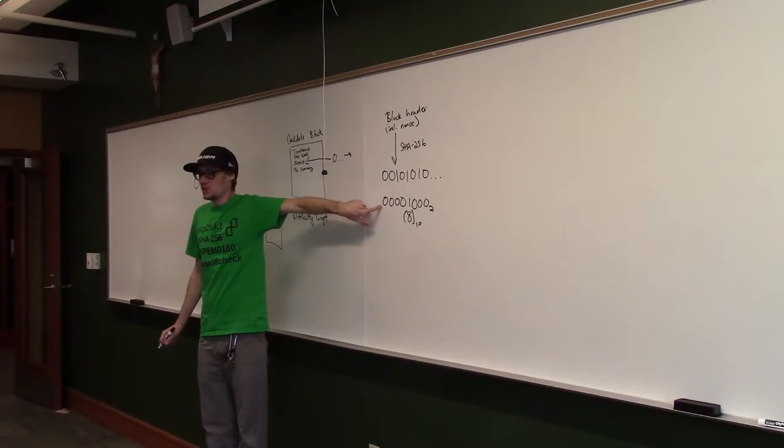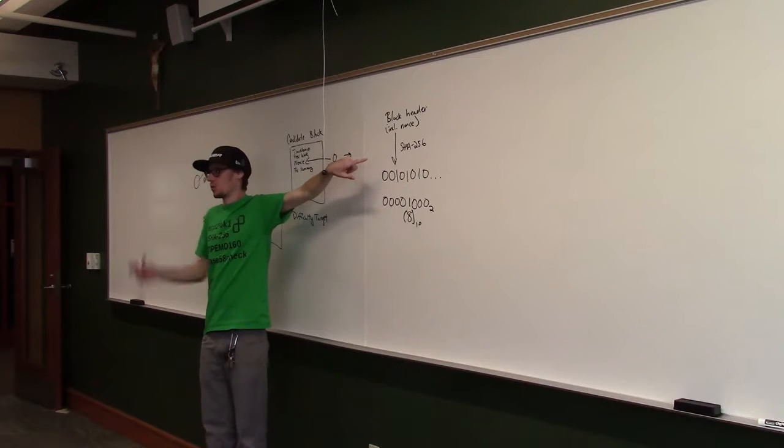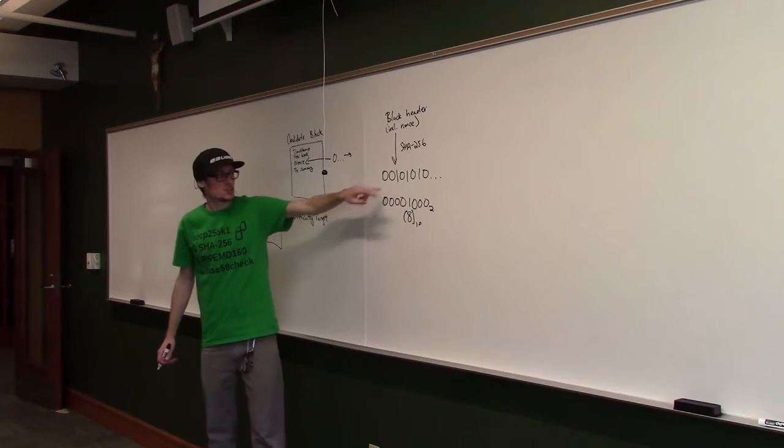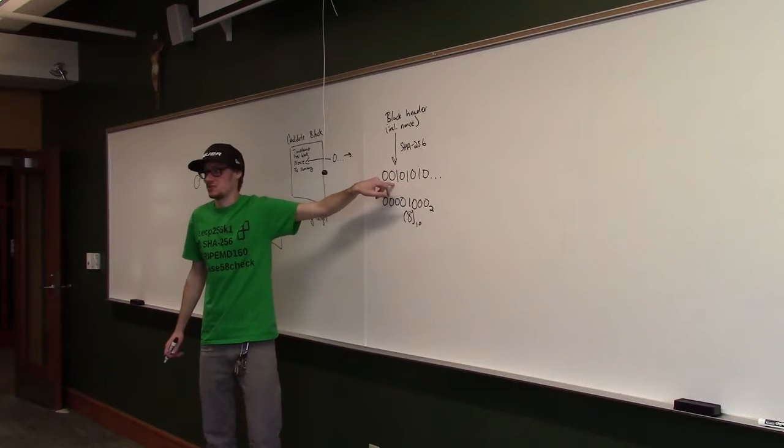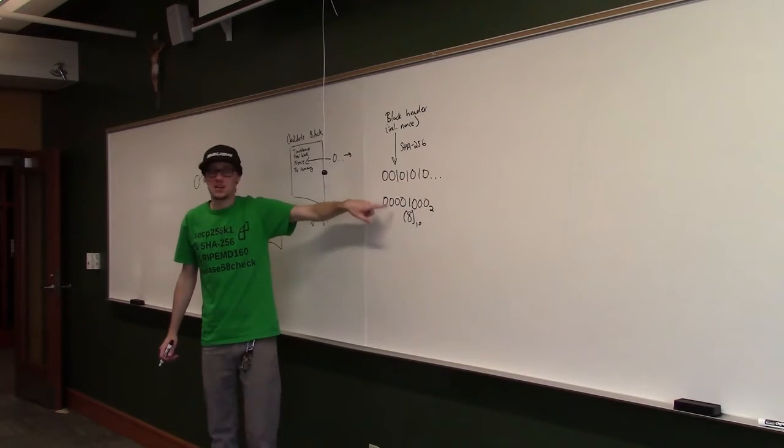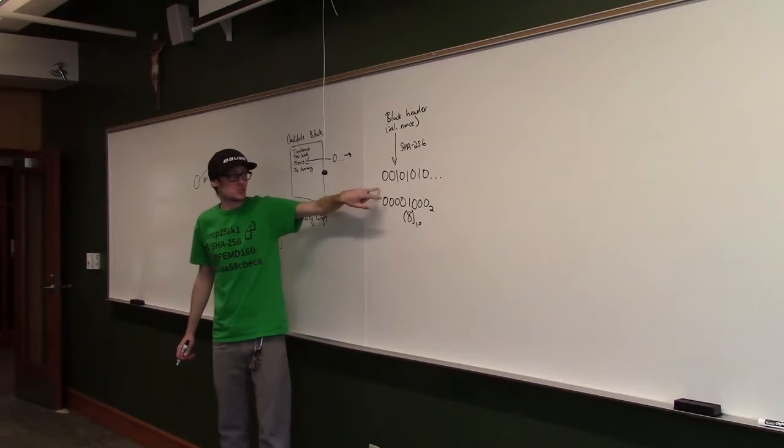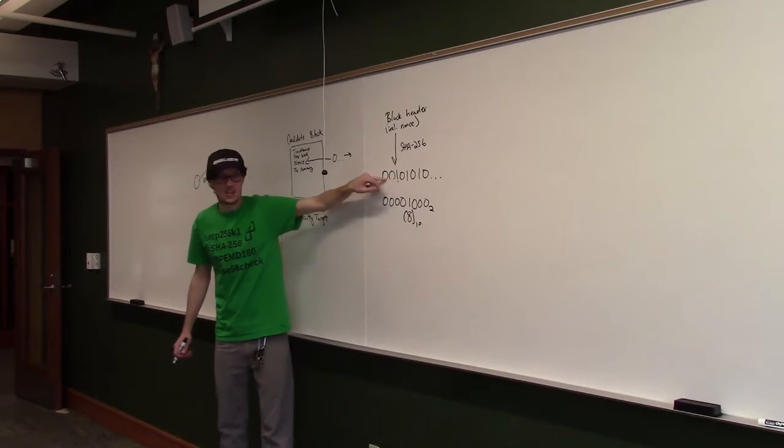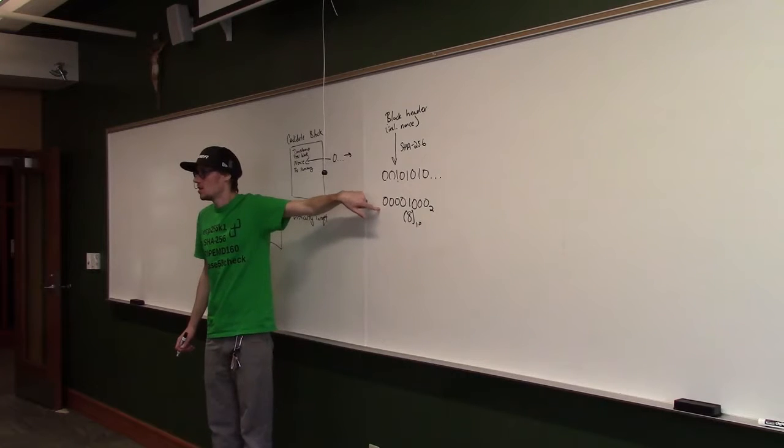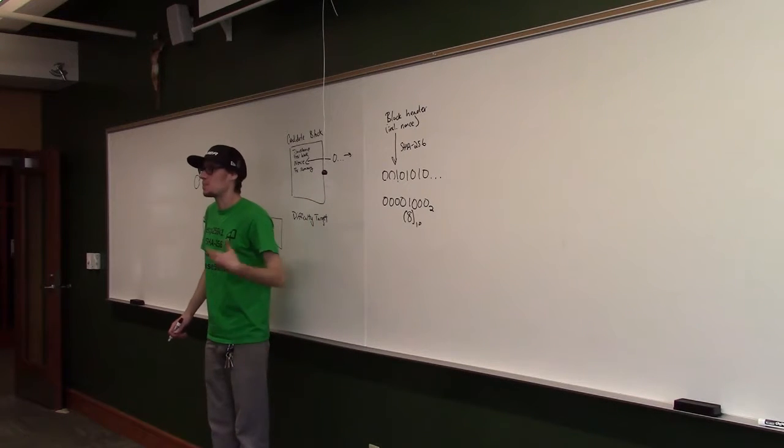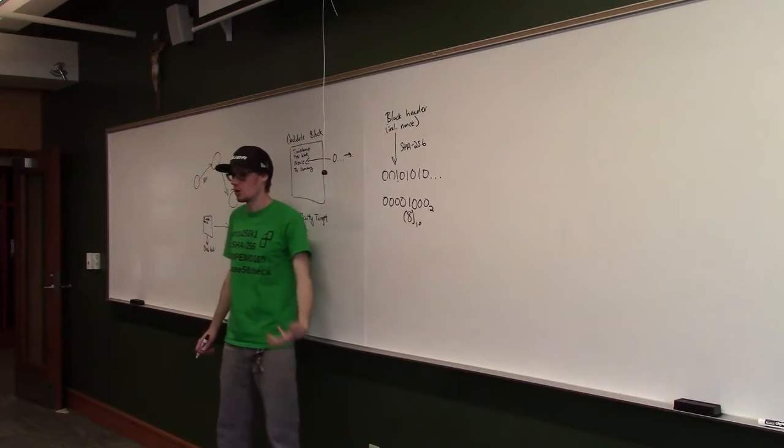Let's say we literally started out with our nonce at 0 and we're just incrementing a counter for our guesses. This is our first hash output here with a nonce of 0. Does this meet our difficulty requirements? Well, no, because this 256-bit number here is bigger than the difficulty target. So we keep guessing. And we just repeat this process over and over and over again.